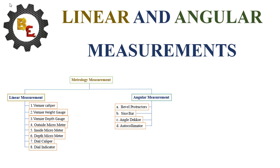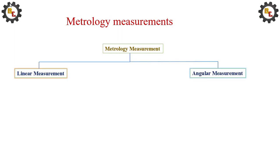Let me see the linear and angular measurements. Metrology measurements are classified into two categories: one is linear measurement, another one is angular measurement.